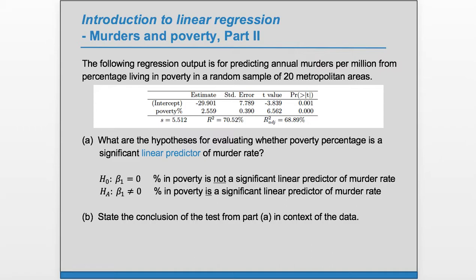t is always the estimate minus the null divided by the standard error. In this case, our estimate for beta1 is b1, and b1 is given in the table right here. Our null is what's hypothesized under the null hypothesis - that's zero. And the standard error is given right here.